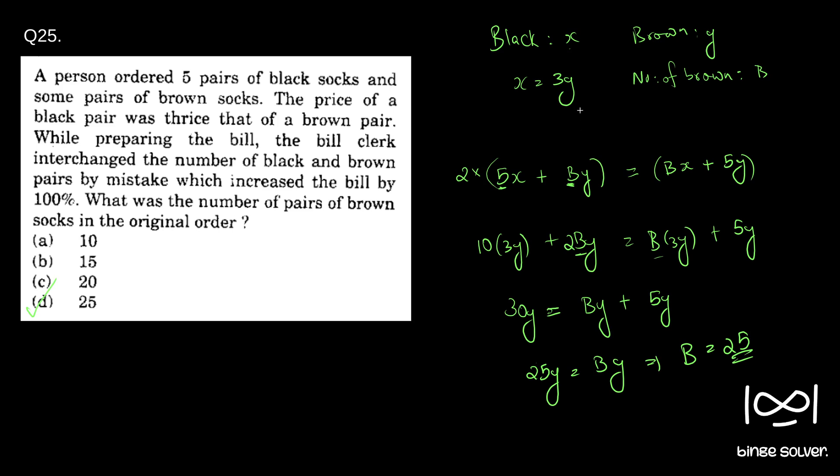So I hope you understood. The variables here are, I will say once more, cost or price of black socks Bx and cost or price of brown socks By. So it is given x is equal to 3y. And the equation is formed using the given information that when the number of pairs of black and brown socks were interchanged in the bill, it increased by 100 percentage.